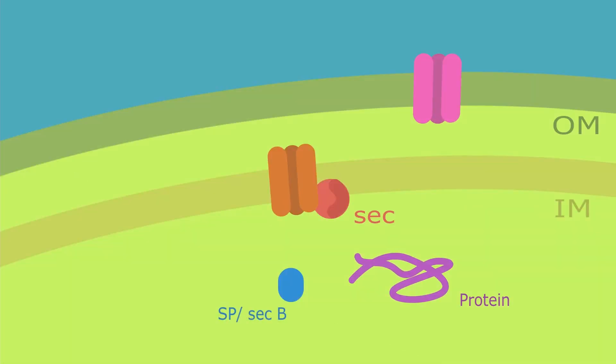Now what we see here is the purple protein that's going to be secreted and a couple of secretory proteins.